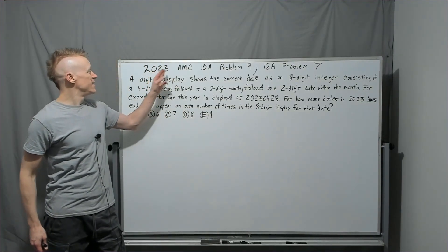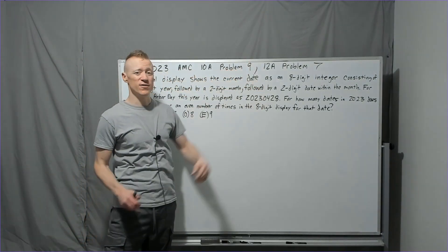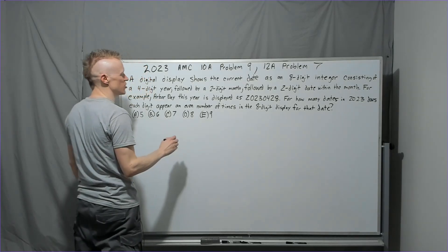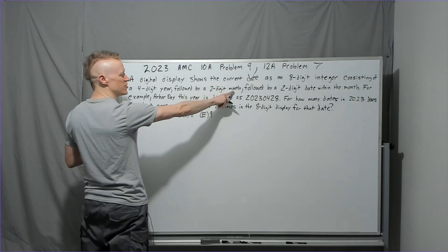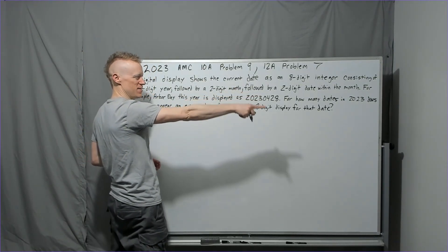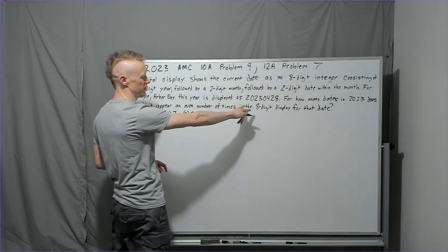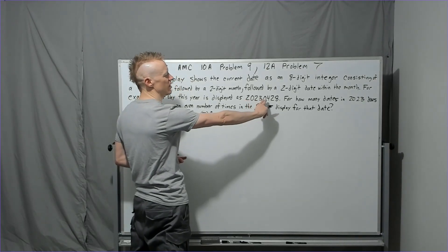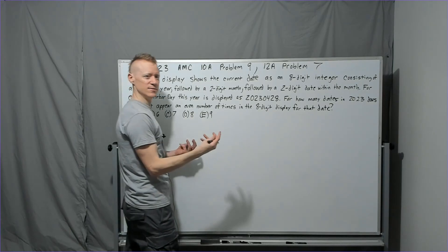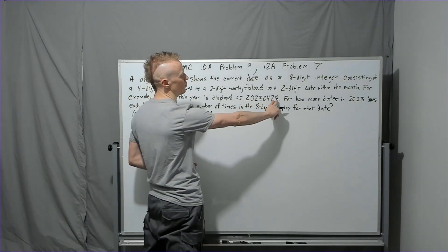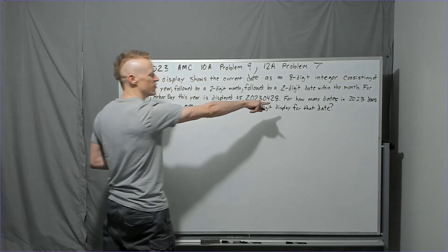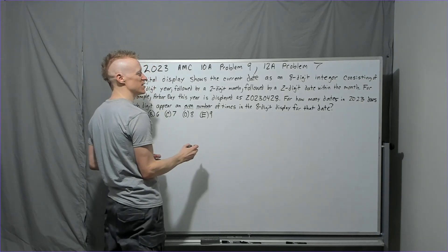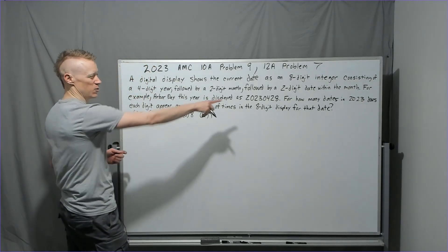Next is problem nine on the 10A, problem seven on the 12A. A digital display shows the current date as an eight-digit integer: a four-digit year, two-digit month, two-digit day. For example, Arbor Day 2023 is displayed as 20230428. For how many dates in 2023 does each digit appear an even number of times in the eight-digit display?